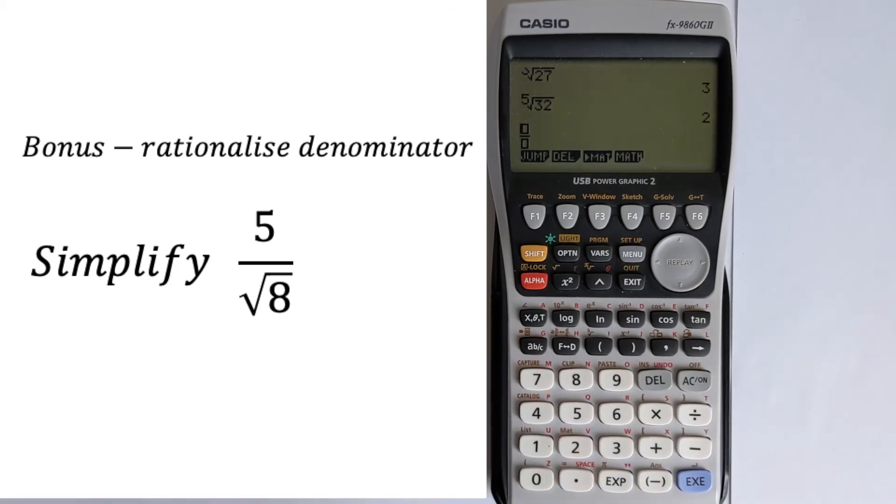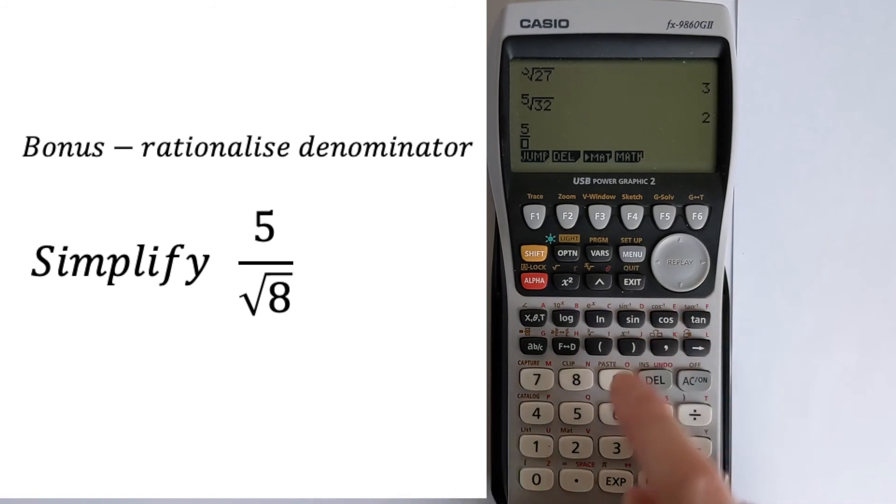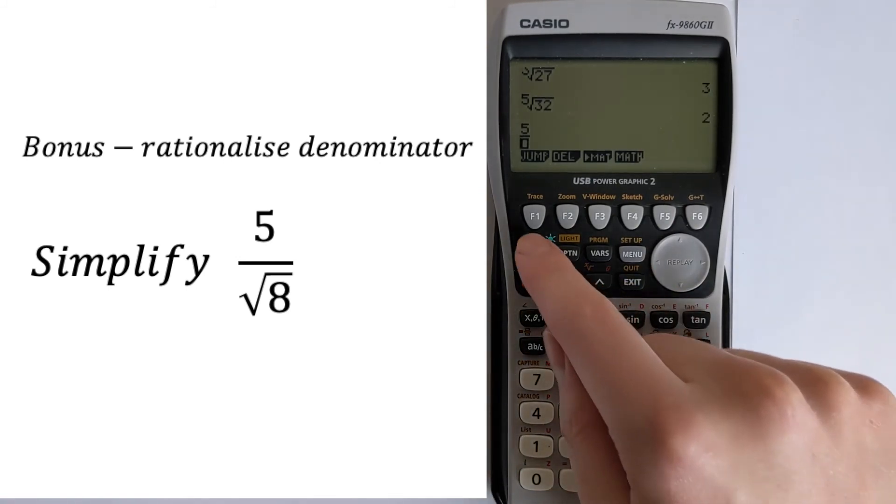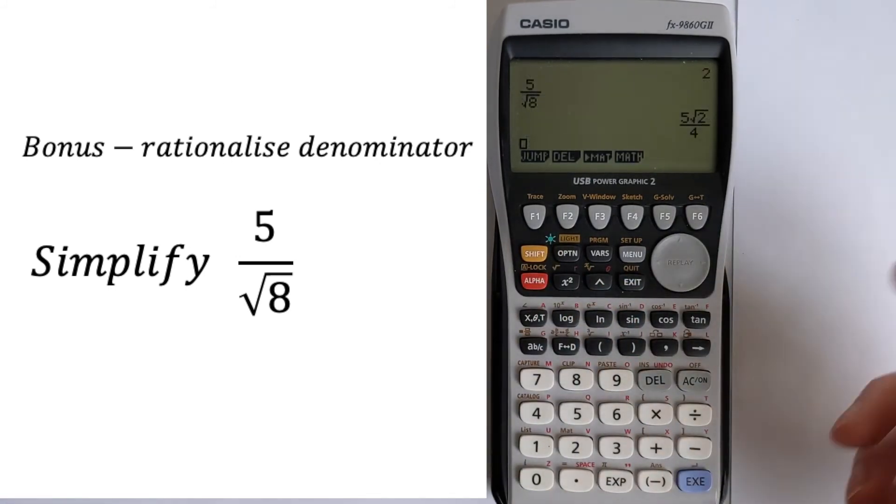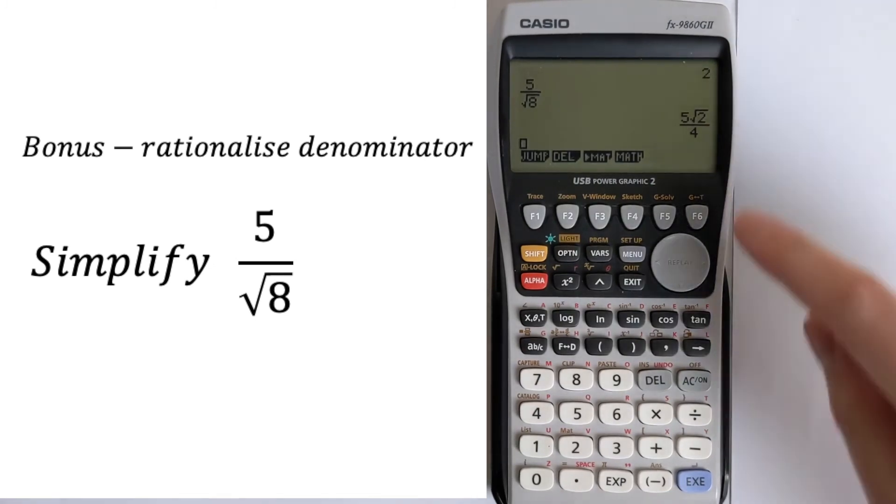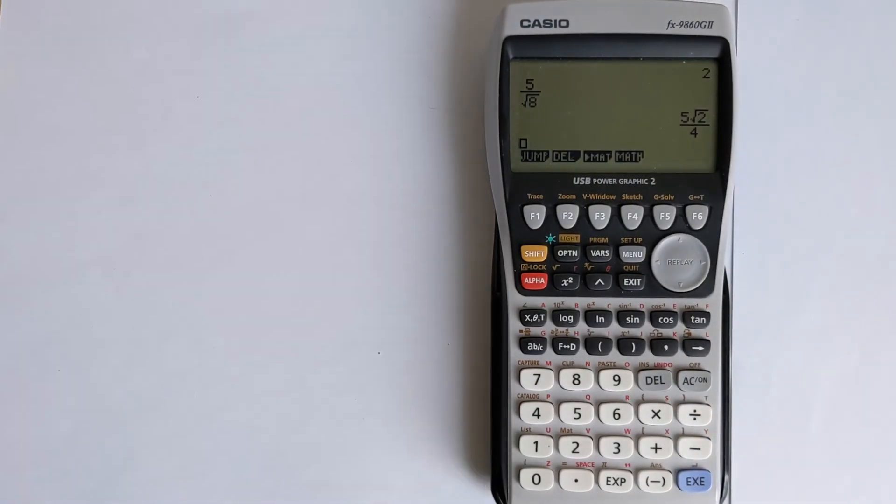So if we press this button here, that gives you a fraction. Then we can do 5 and then put on the bottom, we can have the square root of 8, press equals, and that will present it with a rational denominator and do quite a lot of maths for you.